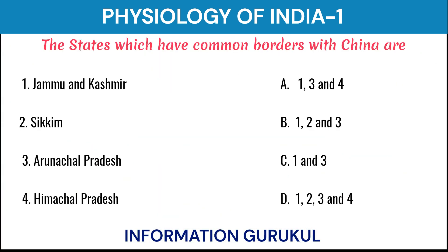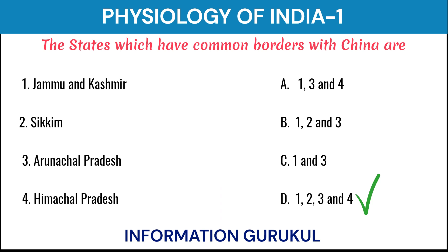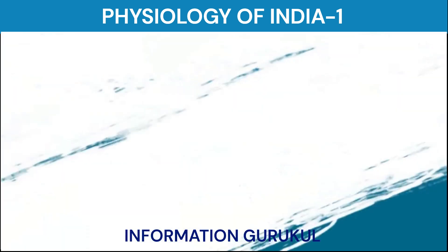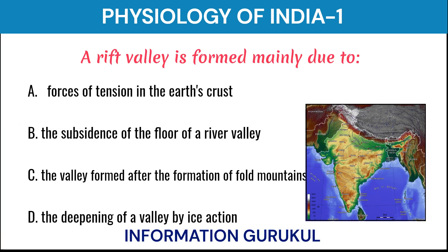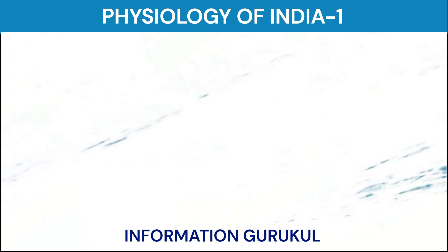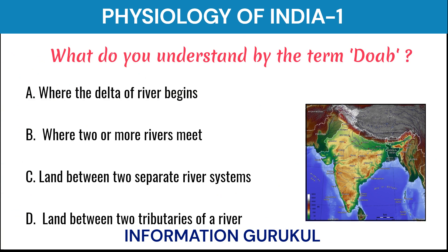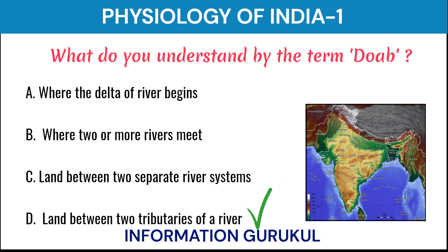The states which have common borders with China are 1, 2, 3, 4. A rift valley is formed mainly due to the subsidence of the floor of a river valley. What do you understand by the term Doab? Land between two tributaries of a river.